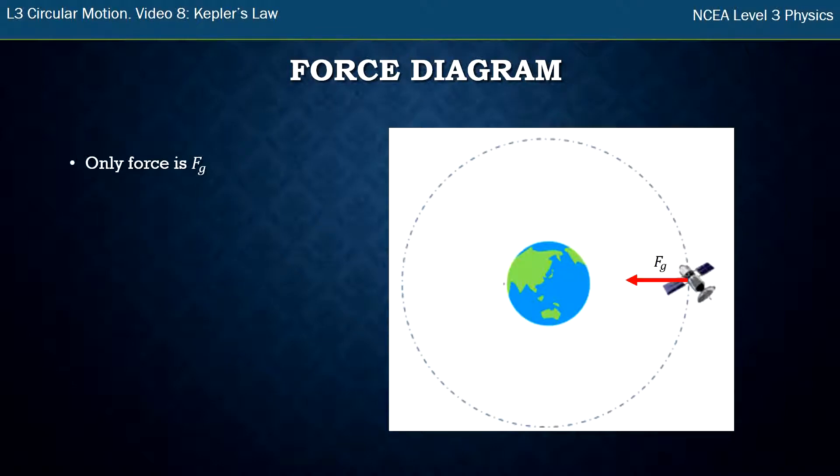In the last video we talked about satellite motion. A satellite needs to be in an orbit traveling in circular motion. The only force acting on the satellite is the force of gravity from the earth, and Newton's law of gravity gives us a formula for that.